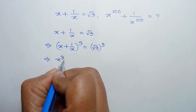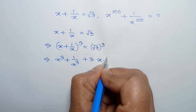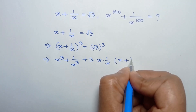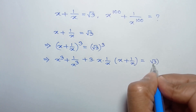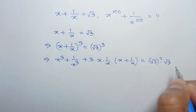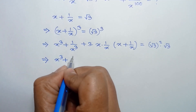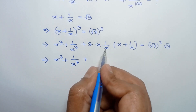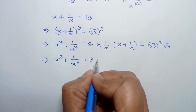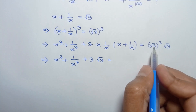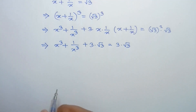we can write x cube plus 1 over x cube plus 3 times x times 1 over x times x plus 1 over x is equal to square root of 3 whole cube, which can be written as square root of 3 whole square times square root of 3. The x and x cancel out, so it remains 3 times x plus 1 over x, which equals 3 times square root of 3.